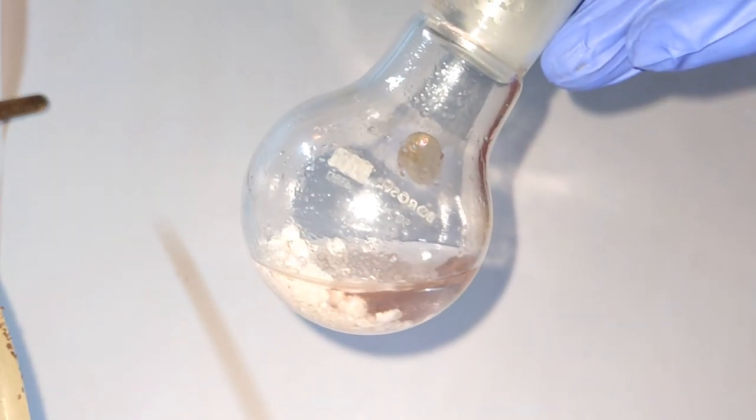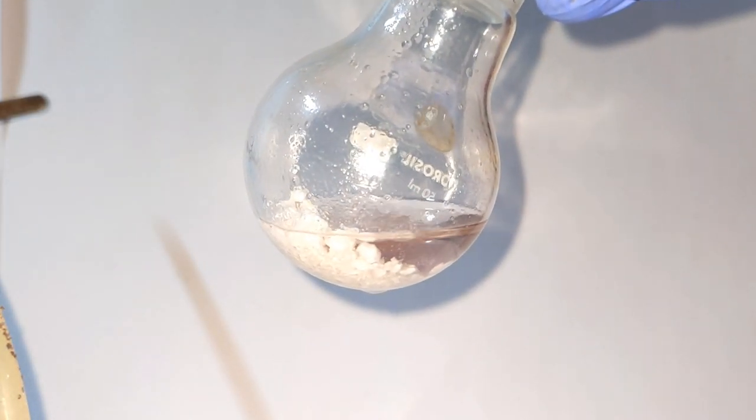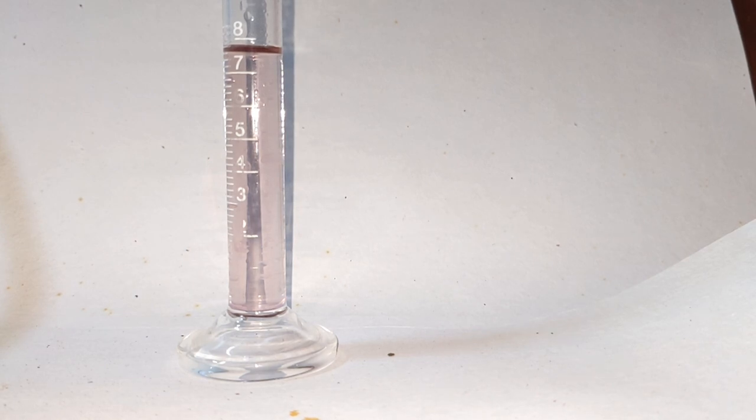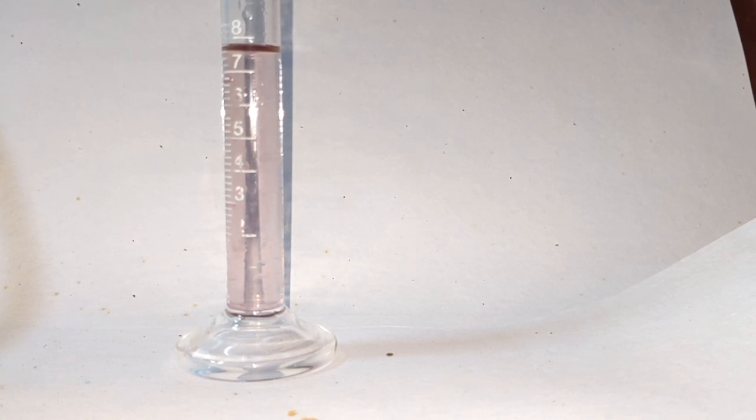And this crude dimethylaniline was then added to calcium chloride and it was dried. We collected about 7.8 ml of the dimethylaniline. And that's all in this video.